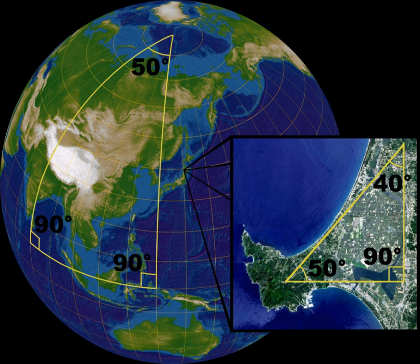Regardless of the form of the postulate, it consistently appears to be more complicated than Euclid's other postulates: (1) To draw a straight line from any point to any point. (2) To produce a finite straight line continuously in a straight line. (3) To describe a circle with any center and distance. (4) That all right angles are equal to one another. For at least a thousand years, geometers were troubled by the disparate complexity of the fifth postulate, and believed it could be proved as a theorem from the other four.